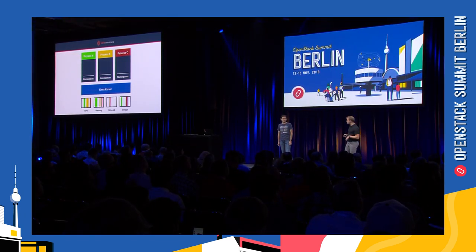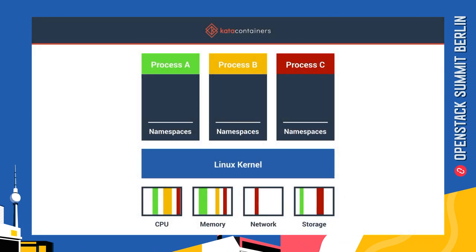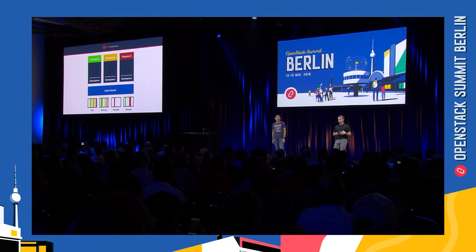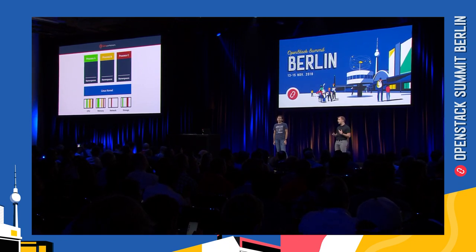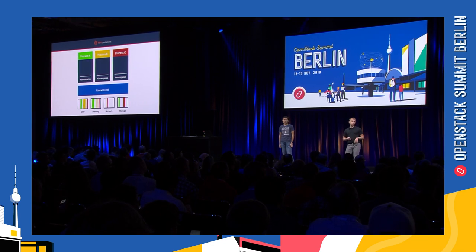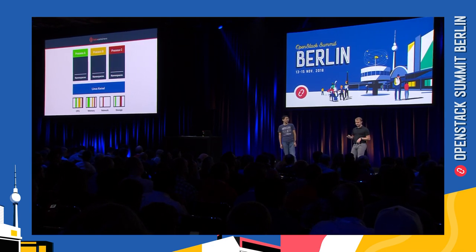Next, let's talk about control groups — cgroups. We need to avoid a situation where process B is using all the CPUs on the system. That's providing a suboptimal experience for everyone else and is kind of acting like a denial of service. Control groups are used here to throttle or limit the amount of CPU, memory, or I/O that a process can execute. So that's another key feature.